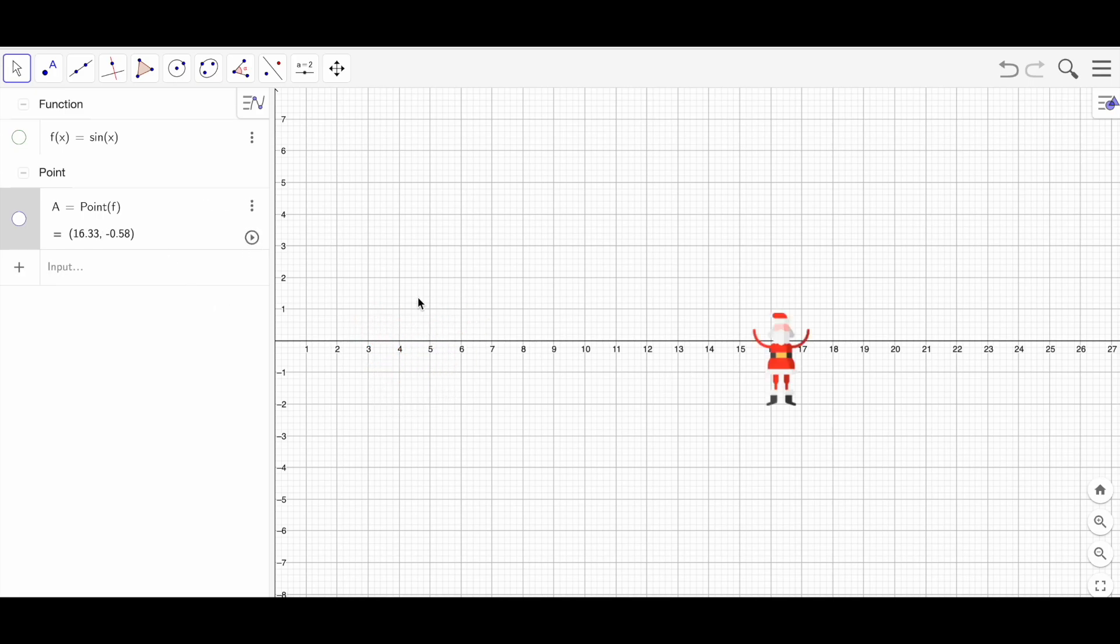But it would be difficult for you if you keep on animating the point and the Santa is out of the screen, right? It will just come and go from there. What you can do if you want to just move Santa from one place to another, better you restrict your function. So I'm clicking on the function.